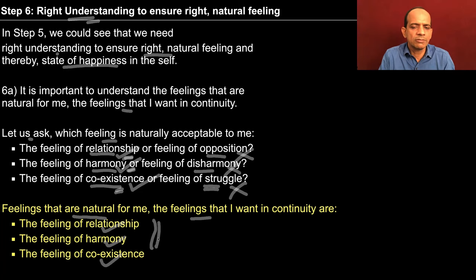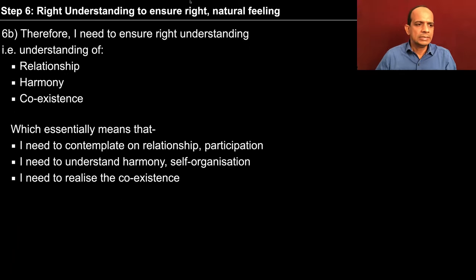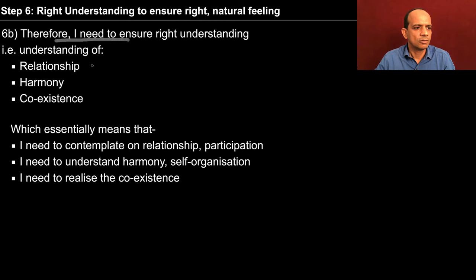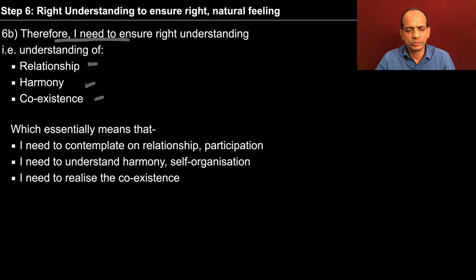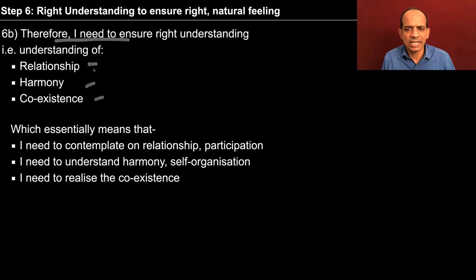This is something that we are saying in step 6a. In step 6b, what we are saying is that therefore I need to ensure right understanding of relationship, harmony and coexistence. So this is something naturally acceptable to me, so I need to understand this. First of all, we asked what is naturally acceptable, then we observed that yes, these feelings are naturally acceptable. And then I conclude for myself that I need to understand this.